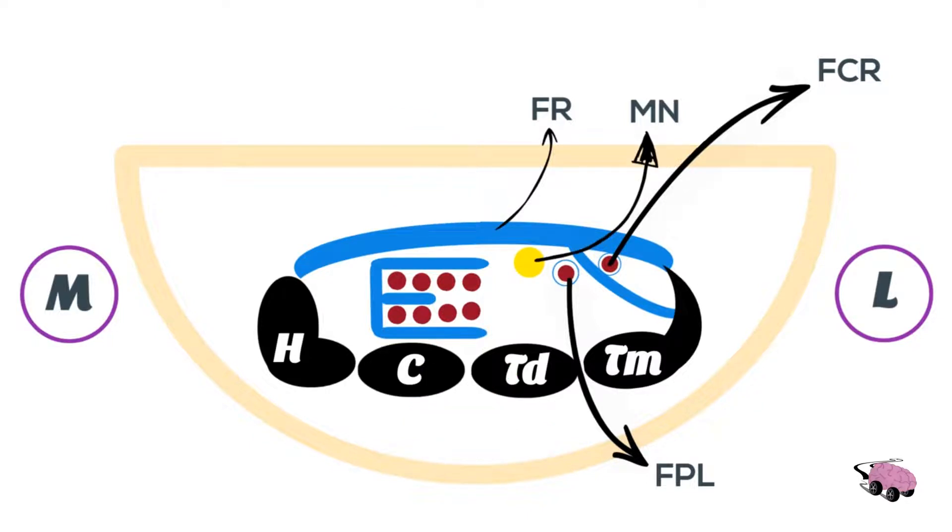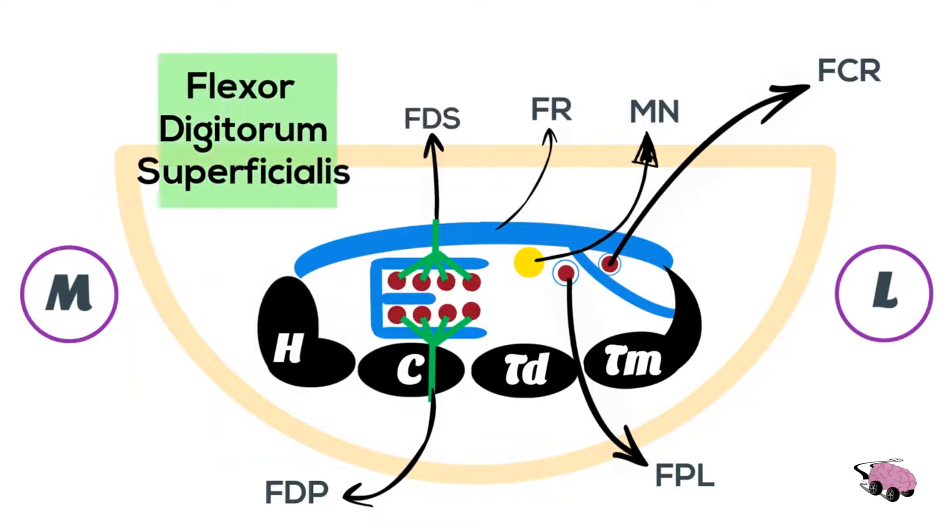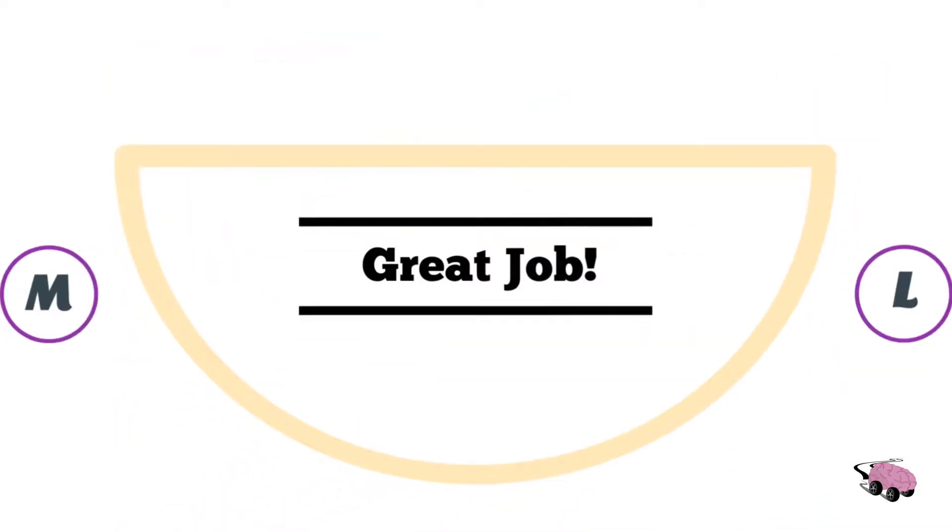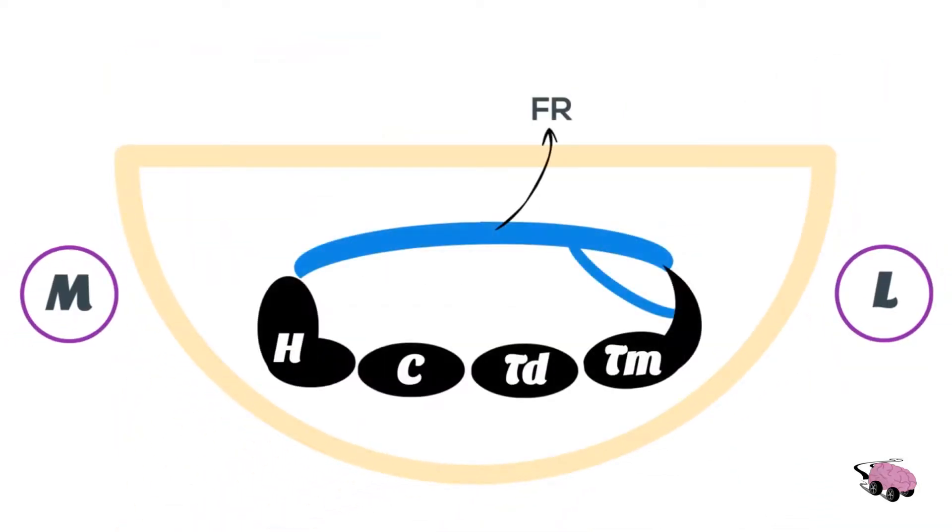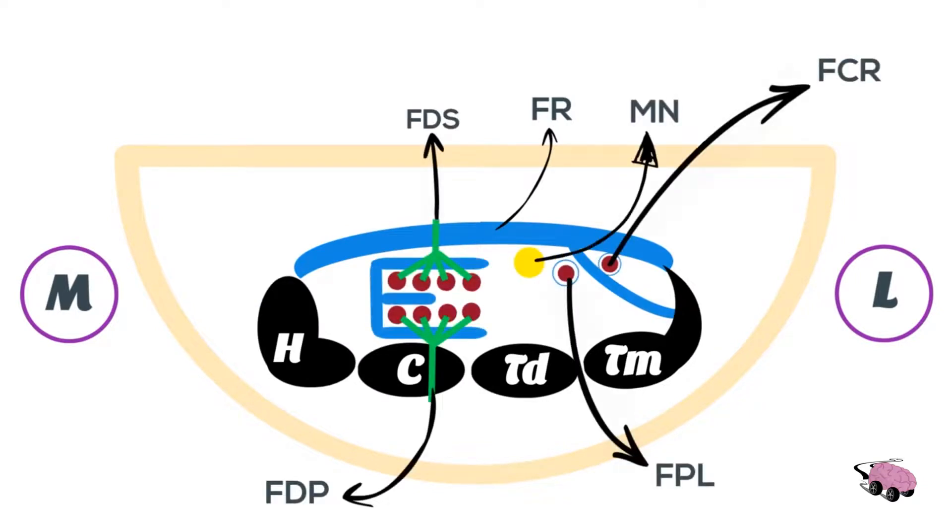On to the labeling. We have these four tendons as flexor digitorum profundus, and these four tendons above it are flexor digitorum superficialis. Great job! These are the structures forming the carpal tunnel and structures inside the carpal tunnel itself.